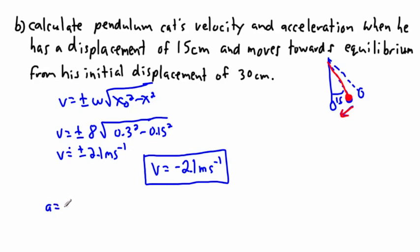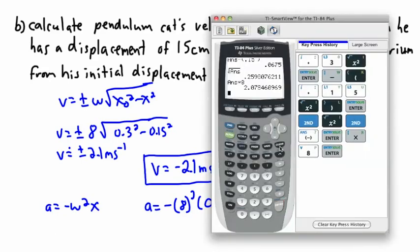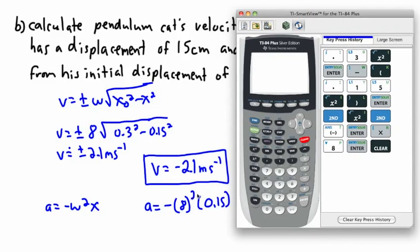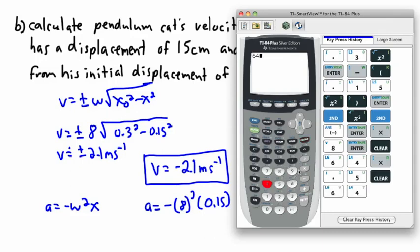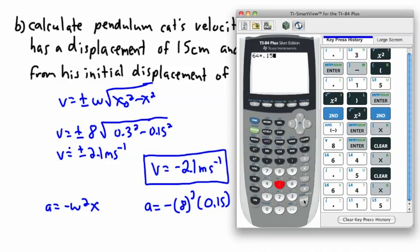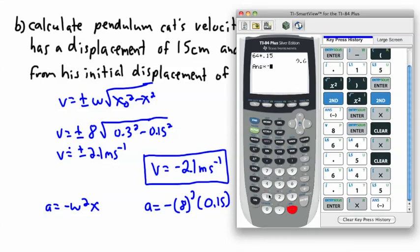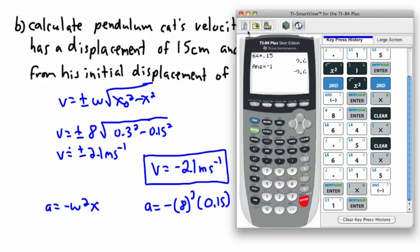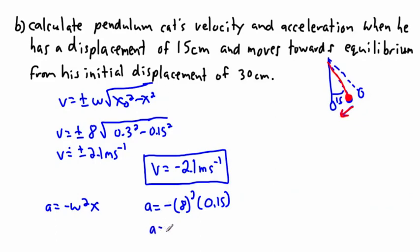I also need the acceleration. The simple harmonic motion equation gives: a = −ω²x. With ω = 8 and x = 0.15 m: a = −8² × 0.15 = −64 × 0.15 = −9.6 meters per second squared. That is his acceleration at that moment.